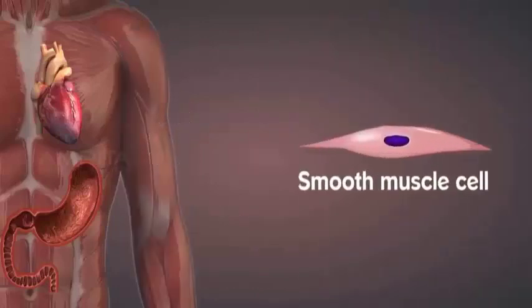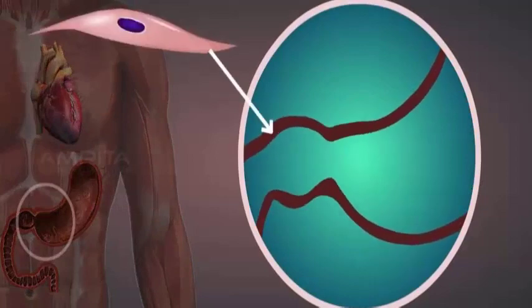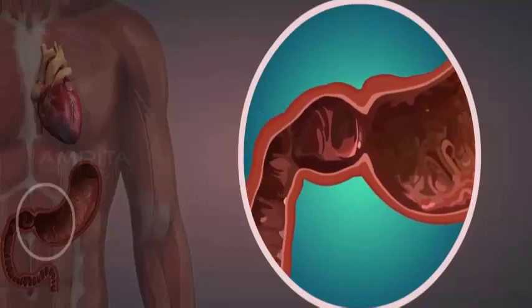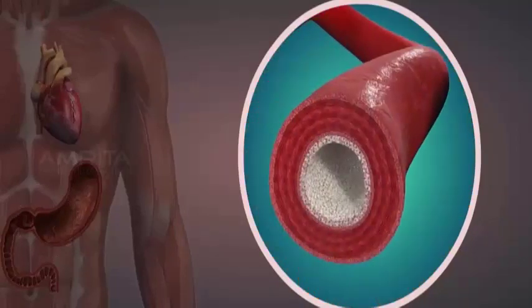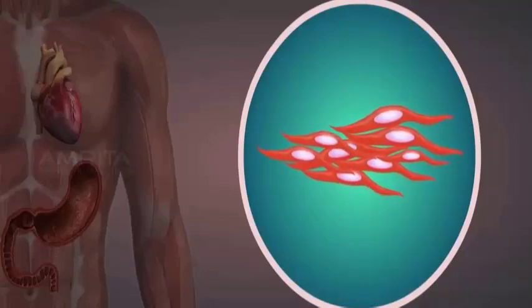Smooth muscle cells provide involuntary movements such as the contraction of walls. They line the walls of the hollow structures of the body. Smooth muscle cells are found in the intestines and blood vessels. They are spindle shaped, flat, pointed at both ends and broad at the middle.